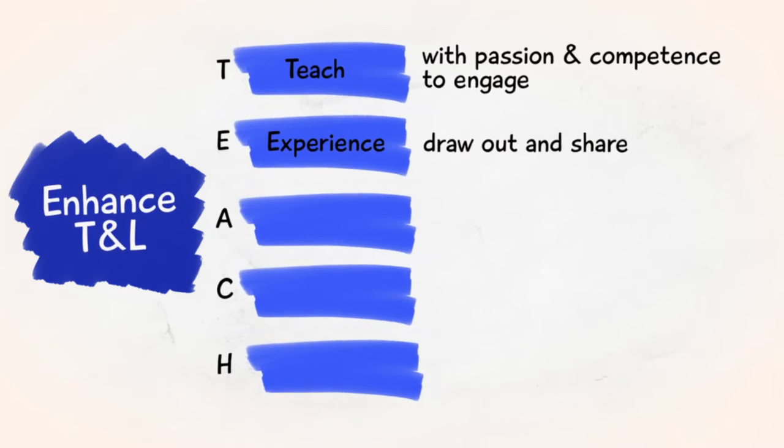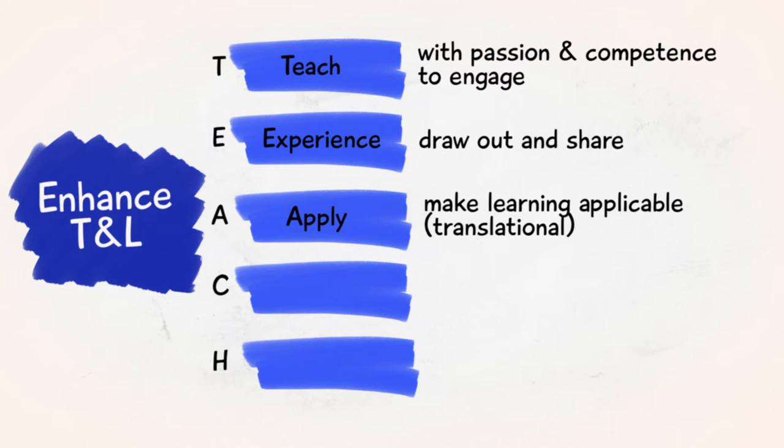The E is to draw out experiences from the students. Rather than coming to class fully prepared with your slides, flip your classroom. Let the students find out before they come to class and let them share what they know. A is to be more applied in your approach — that means becoming more creative. Apply design thinking in your classes. Think about the students first, not the curriculum. What do they need to know and understand so that the subject matter can be remembered better when they go out into the workplace?